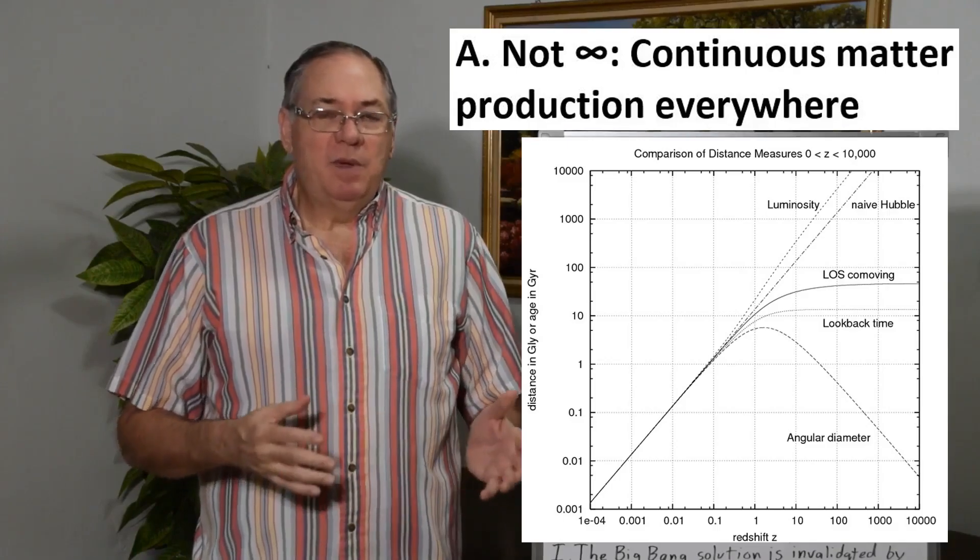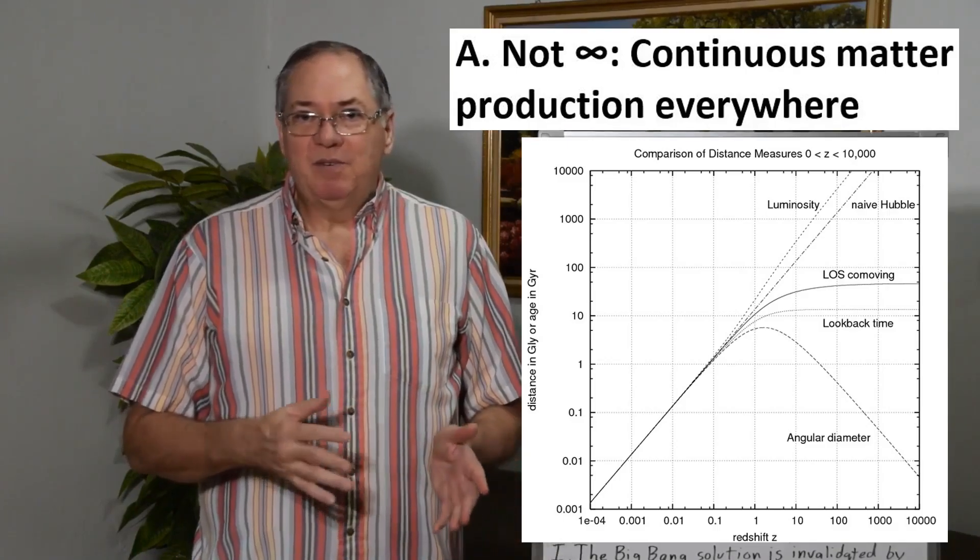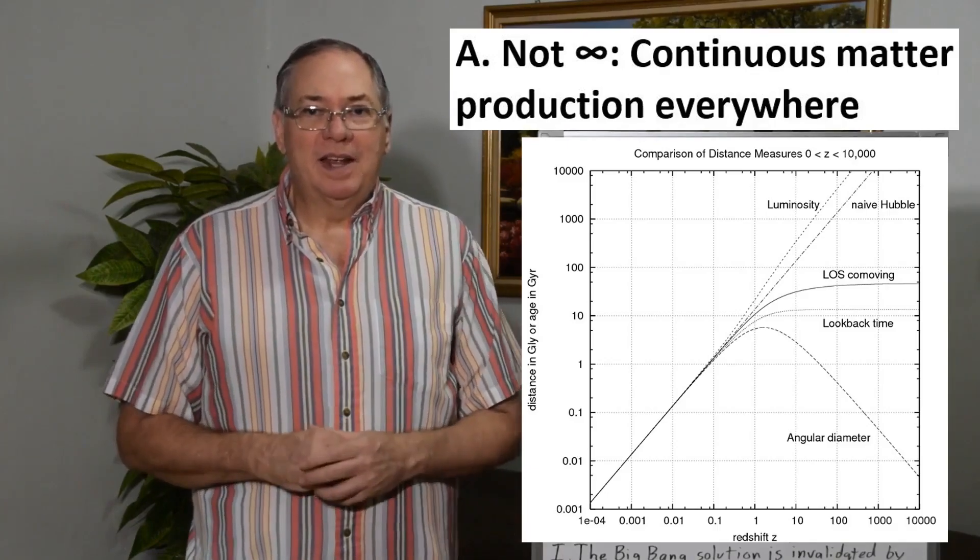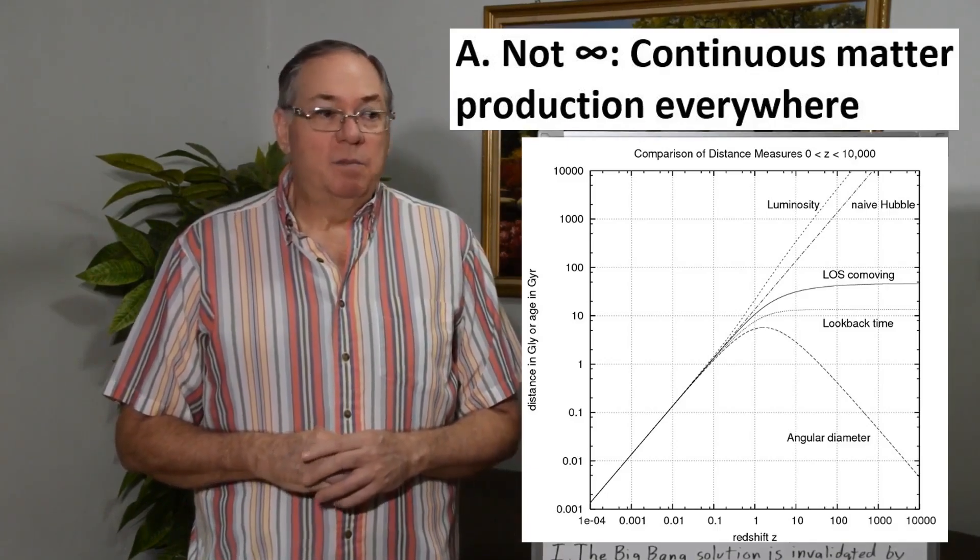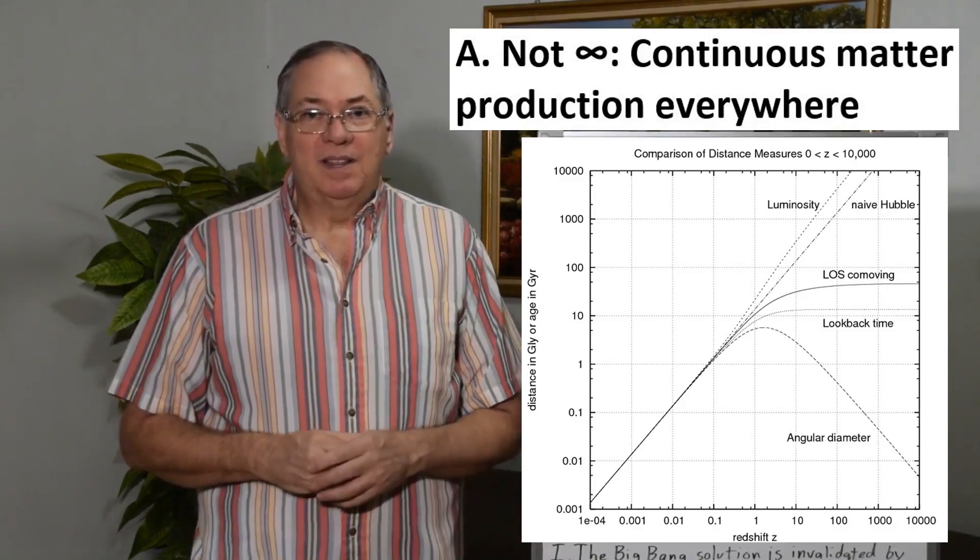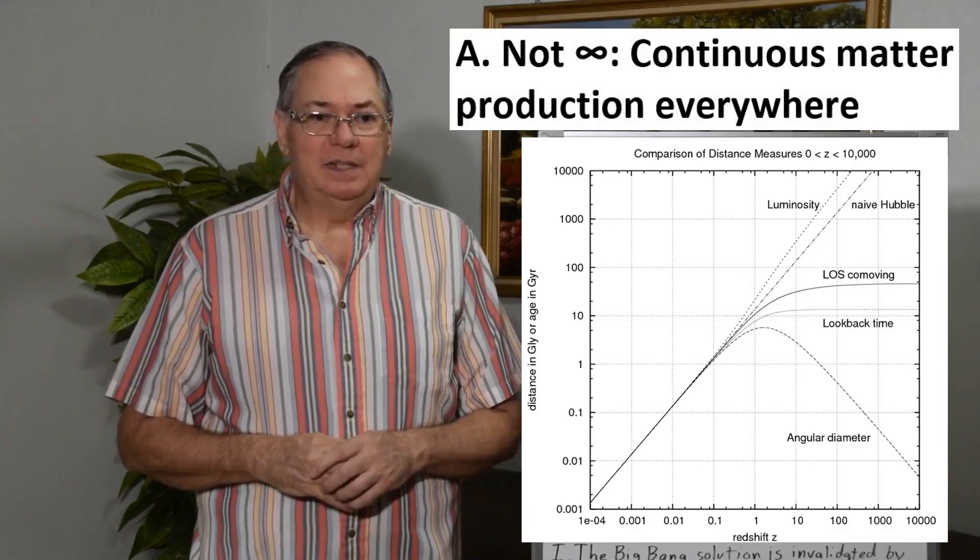But I think that we can observe somewhere between Z equals 100 to 300 sometime in the next 100 years. So perhaps that's where the true observable limit is.